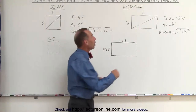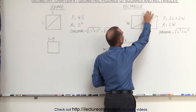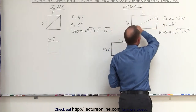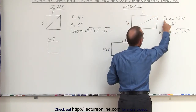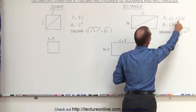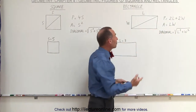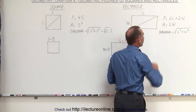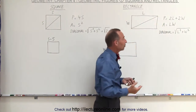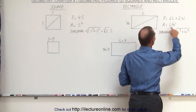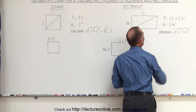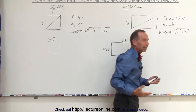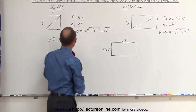For rectangles, we have a long side and a short side. We tend to call the long side the length and the short side the width. The perimeter, as we go around the rectangle, will have two lengths and two widths, so the perimeter will be twice the length plus twice the width. To find the area, we simply multiply the length times the width. To find the diagonal, just like with the square, it's going to be the square root of the length squared plus the width squared, and we cannot simplify it further like we did for the square.